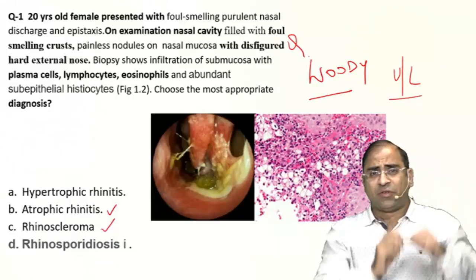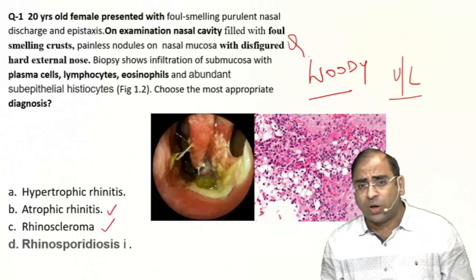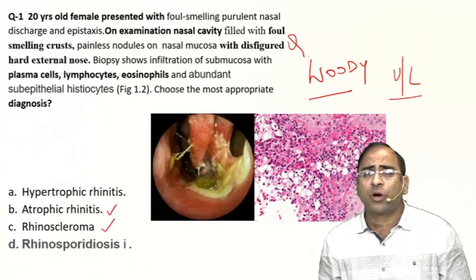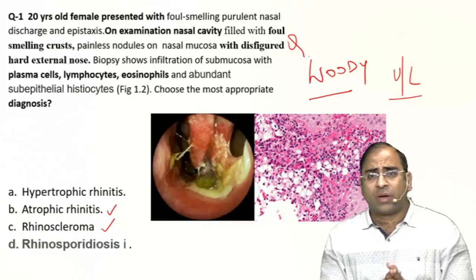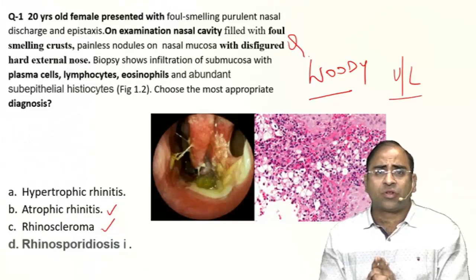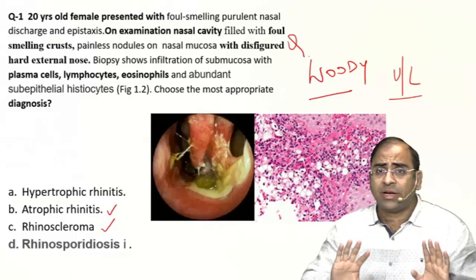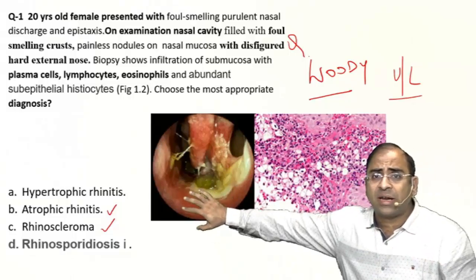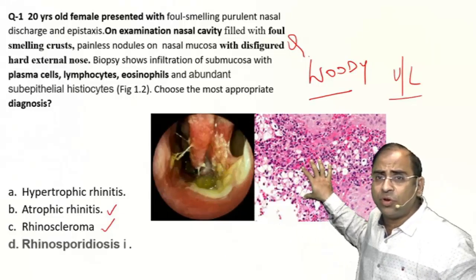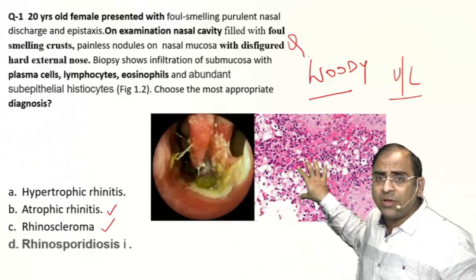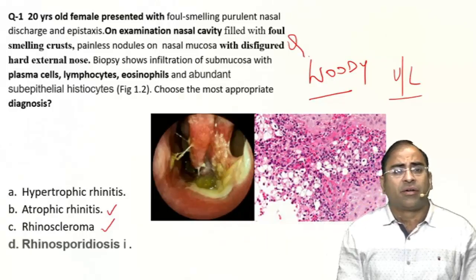The examiner is giving you clues at three levels. First: symptoms — foul-smelling discharge. Second: examination — woody swelling on examination. Third: pathology finding from the biopsy. So the diagnosis goes in favor of rhinoscleroma. Even if you just examine the slide — foul-smelling crust with biopsy — you can directly jump to rhinoscleroma.